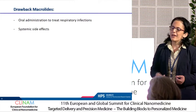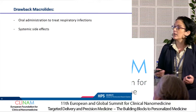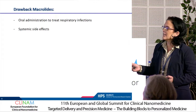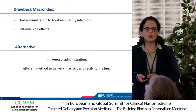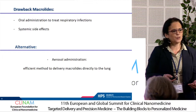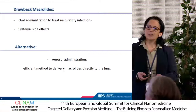Of course, we cannot forget the drawbacks that macrolides have. Usually, they are given via oral administration, which leads to systemic effects and less efficacy of the drug. The alternative we thought of at Helmholtz was to put this drug in a carrier and then try to bring more drug to the site of infection, delivering it via aerosol so we can reach the infection site in the lung.